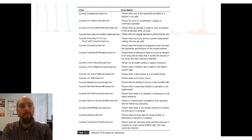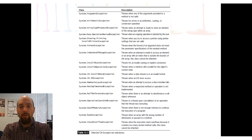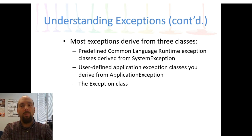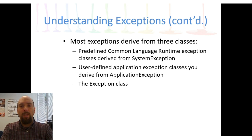We have things like system.ArgumentException, ArithmeticException — things like if we try to perform a conversion or divide by zero. We have a whole bunch of different types of exceptions. Most of them come from one of three classes: predefined common language runtime exception classes, which come from SystemException; application exceptions; and the generic exception class.